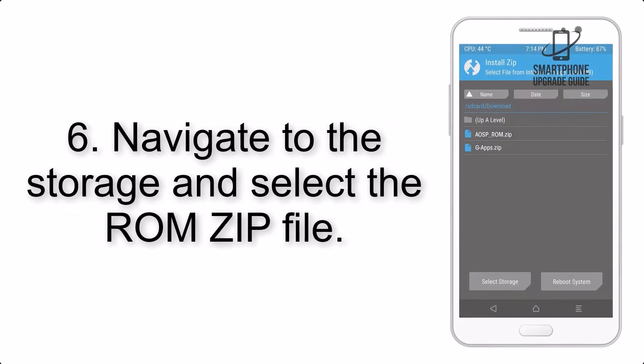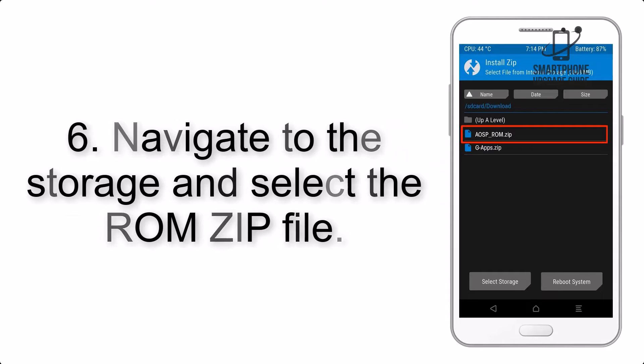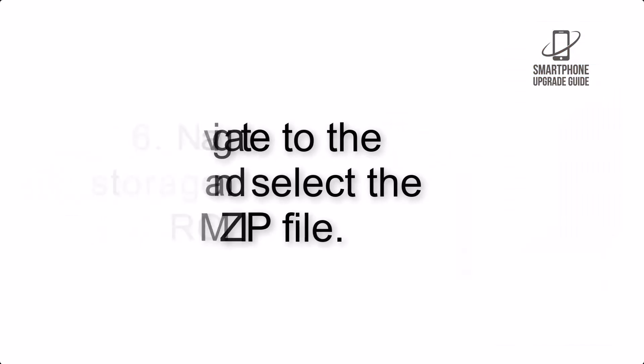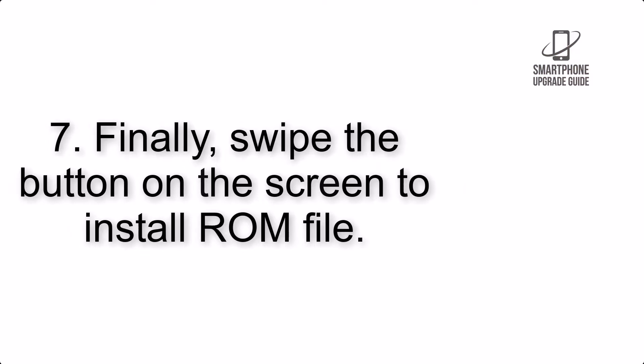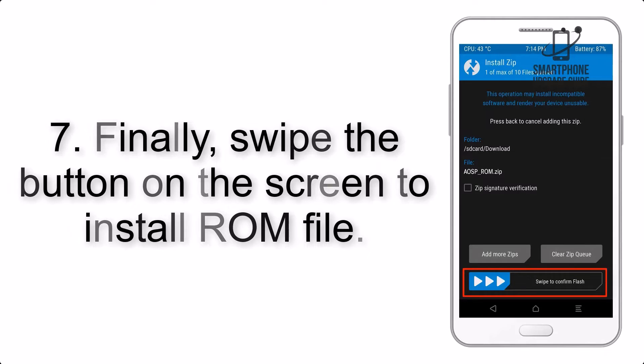Step 6: Navigate to the storage and select the ROM zip file. Step 7: Finally, swipe the button on the screen to install the ROM file.